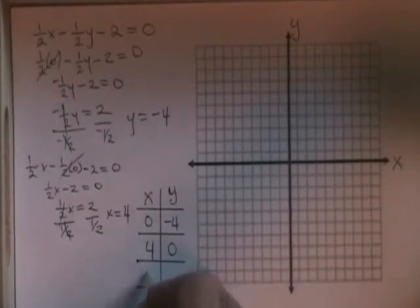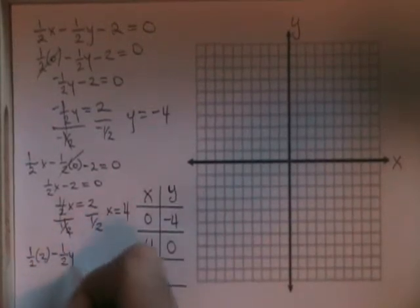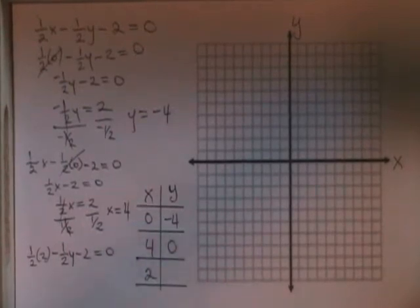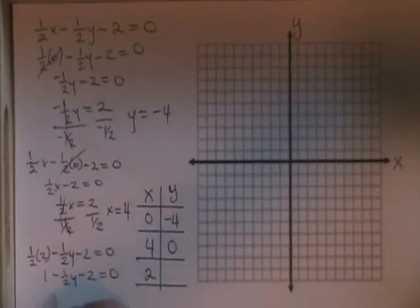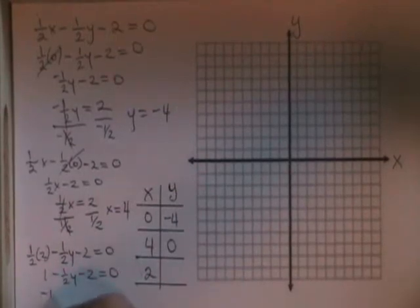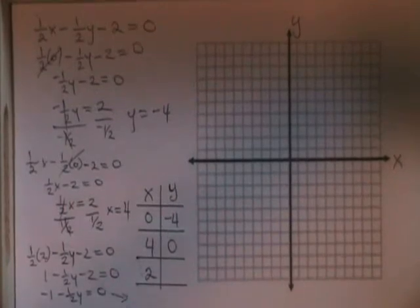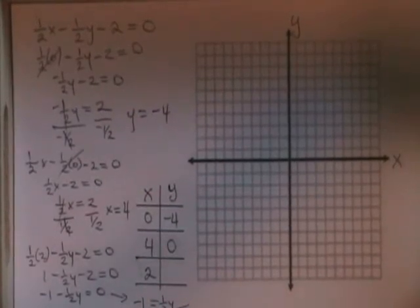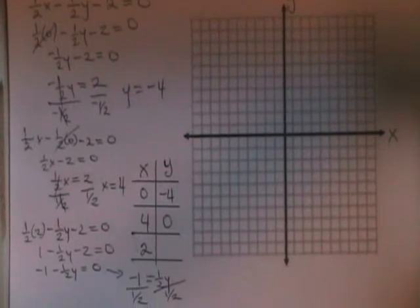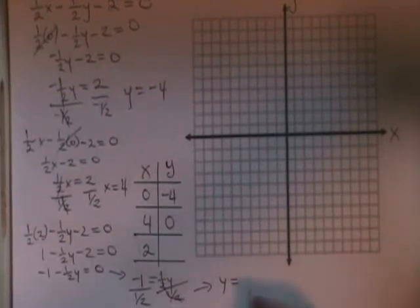If we make x equal to two for our last point, we have one-half of two minus one-half y minus two equals zero. One-half of two is one. One minus one-half y minus two equals zero. If I combine the one and the negative two, I have negative one minus one-half y equals zero. Moving the negative one-half y to the other side, I have negative one equals one-half y. And if I divide both sides by one-half, these cancel, and y is equal to negative one divided by one-half, which is negative two.